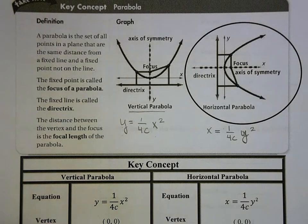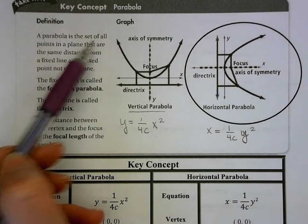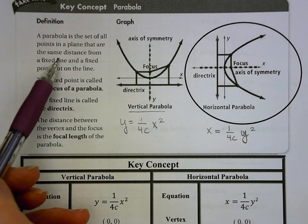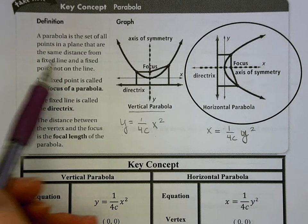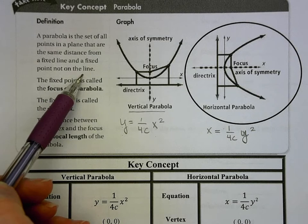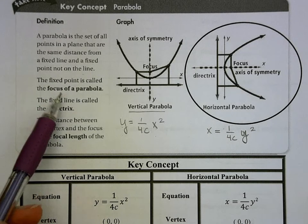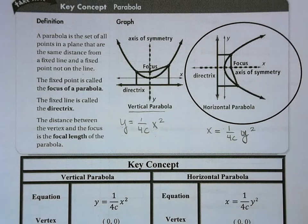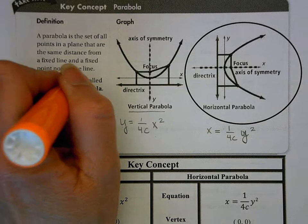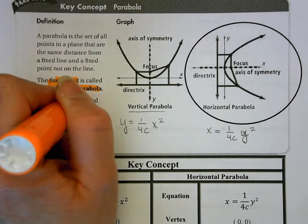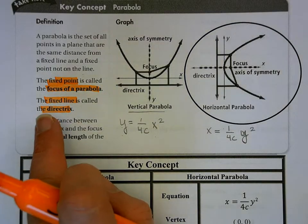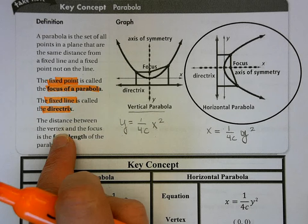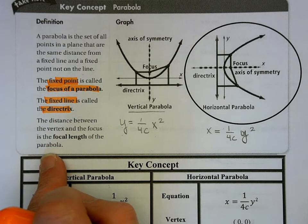Just a couple of reminders: a parabola is a set of all points in a plane that are equidistant from a fixed line — our directrix — and a fixed point not on the line — our focus. The distance from the vertex to the focus is the focal length of the parabola.